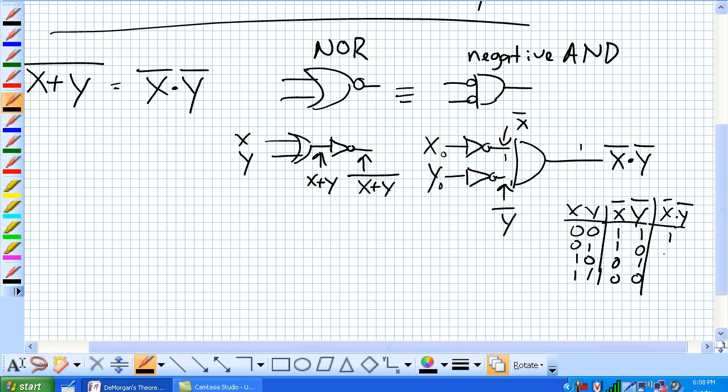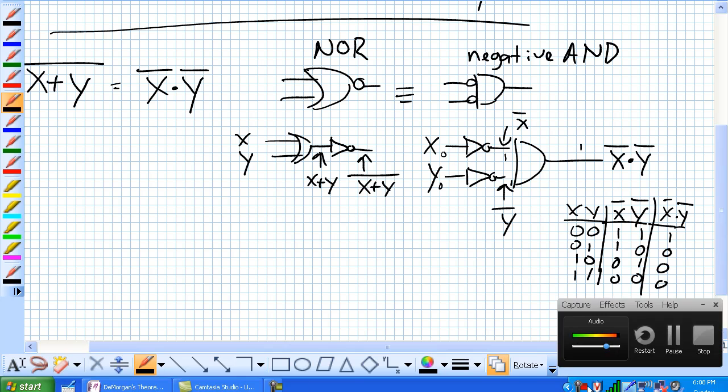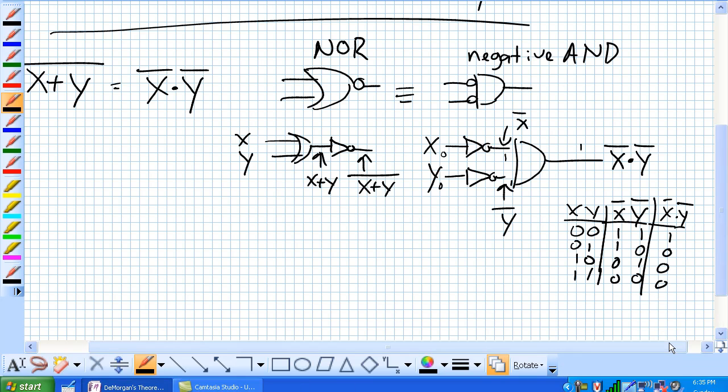So, NOT X AND, whoops, NOT Y. So, 1 and 1 is 1, 0, 0, 0. Okay? And, if we've done our job right, this truth table, which we just designed, should match this guy's right here.